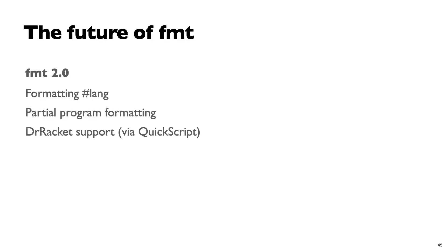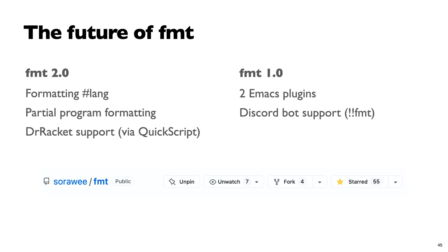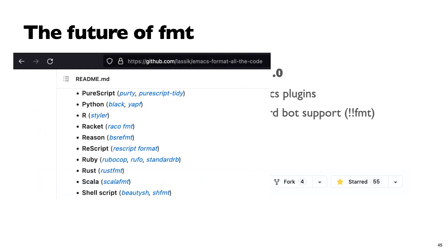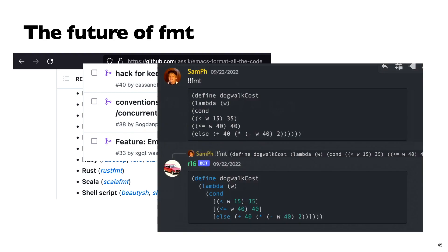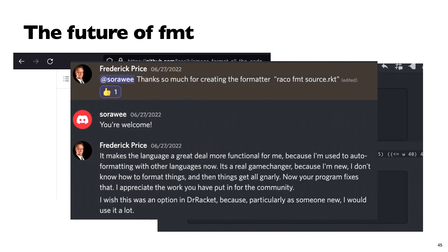That's the demo. This is FMT 2.0 — it supports formatting #lang and hashable formatting, and uses quickscript. FMT 1.0 is already released and people have been using it. It has an Emacs plugin called boxsupport, and I believe Mark Eastman is currently using it in class as well. Here's one of the Emacs plugins using our formatter. People have been contributing to it — hopefully the work is understandable enough for people to contribute. Here's an example of using it in the Discord format, and people have found it helpful.